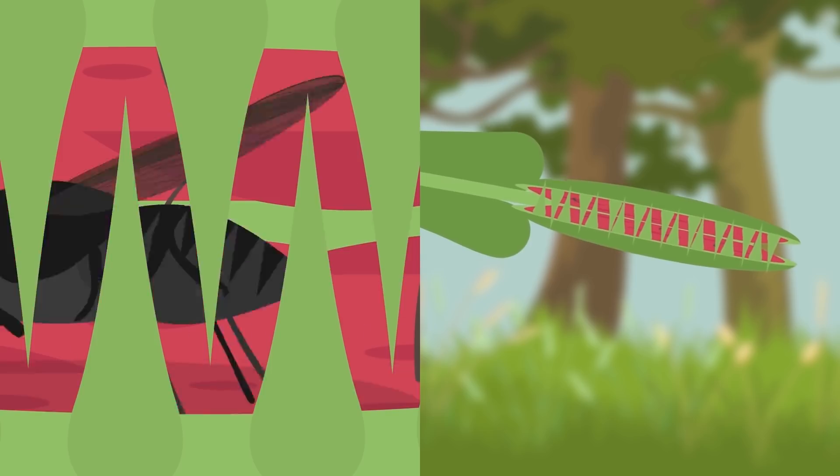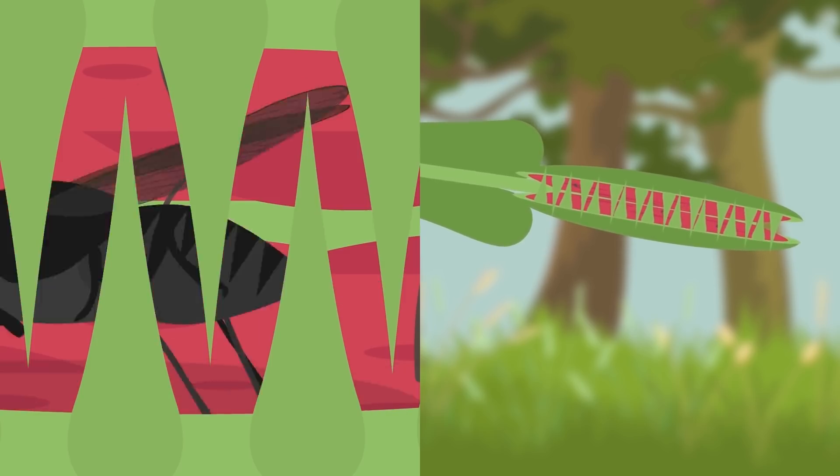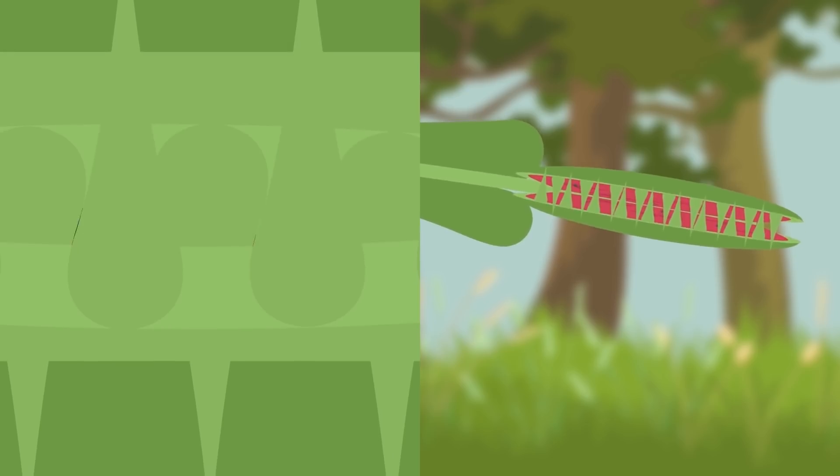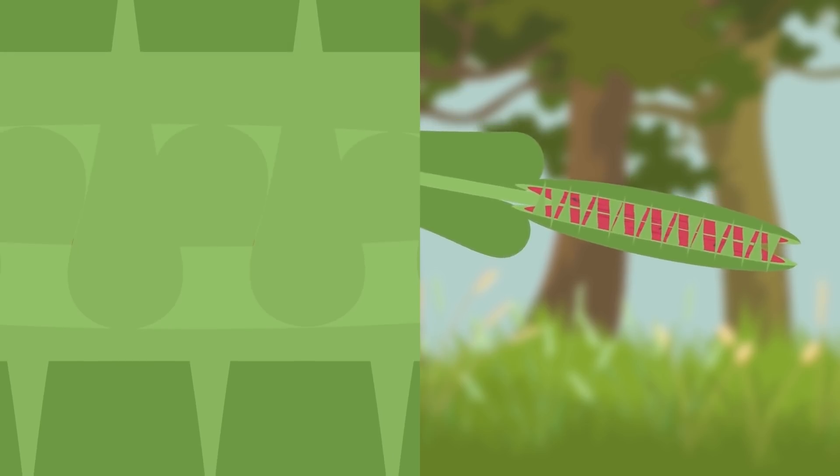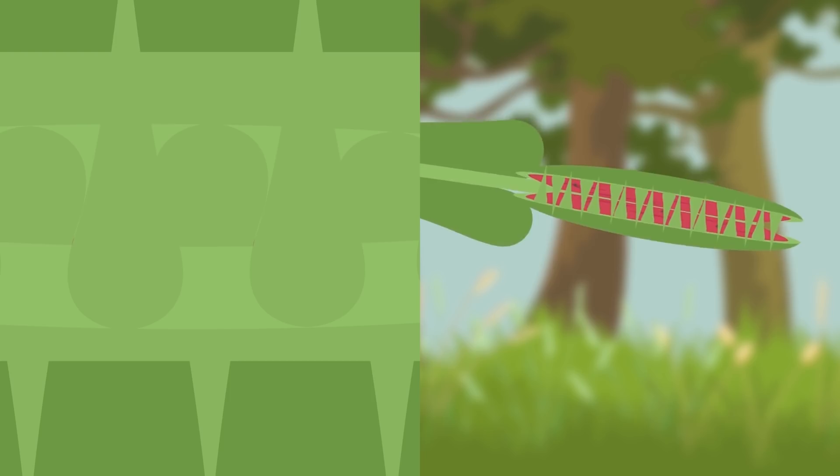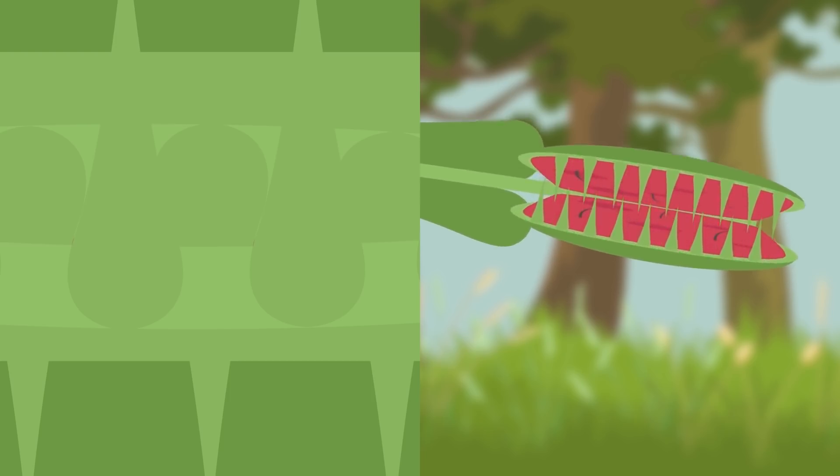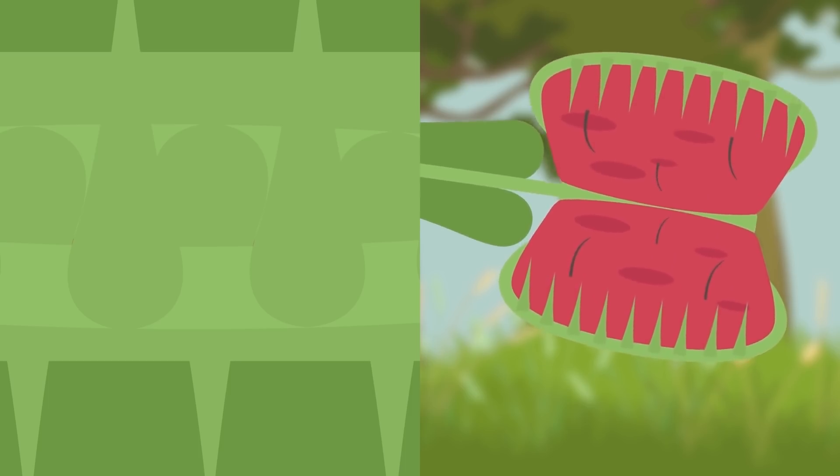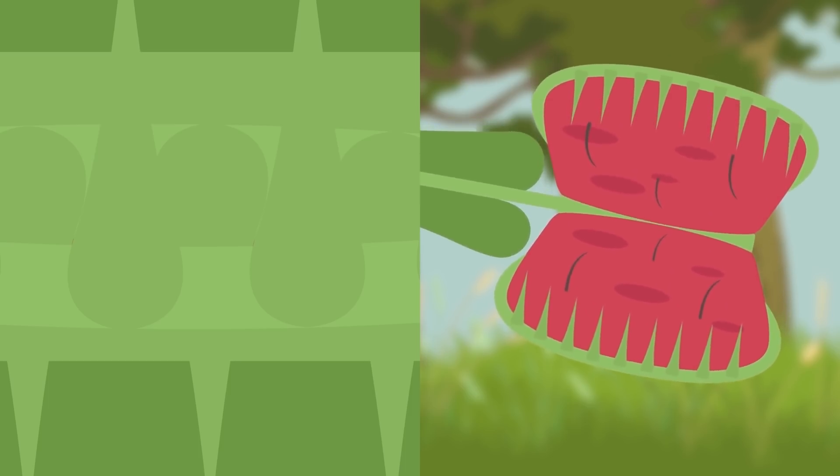Only if the prey keeps moving around inside the trap, triggering the hairs at least five more times, the trap will close completely and begin digestion. Another safeguard against wasting energy that allows the Venus flytrap to reset in case the prey escaped or something else triggered the trap, like a fallen leaf for example.